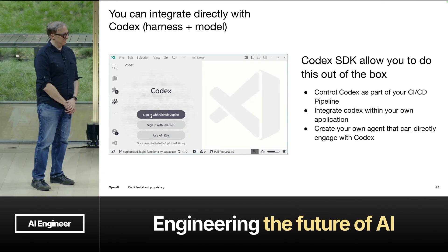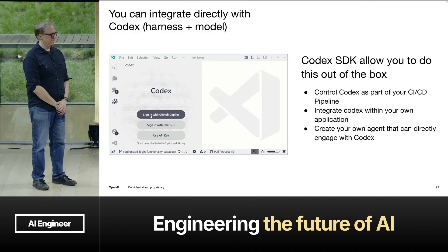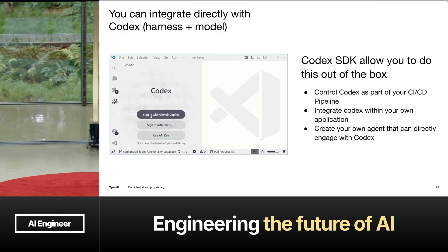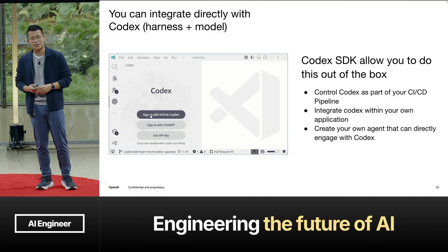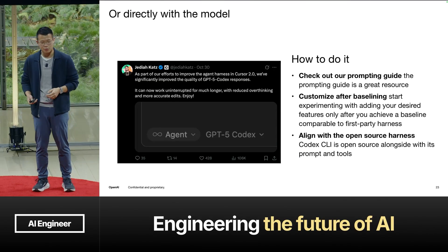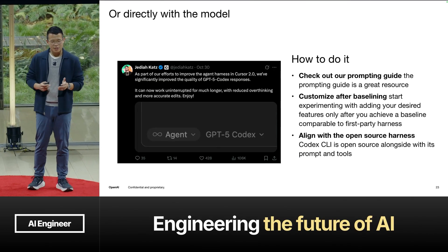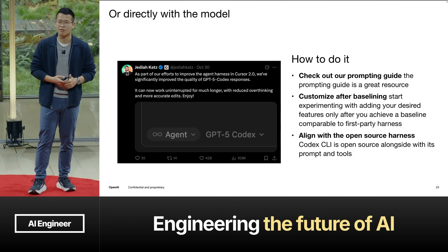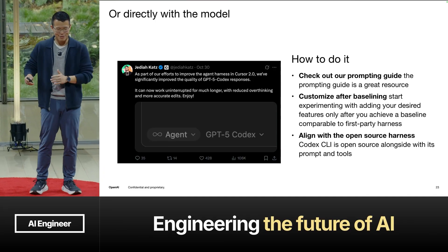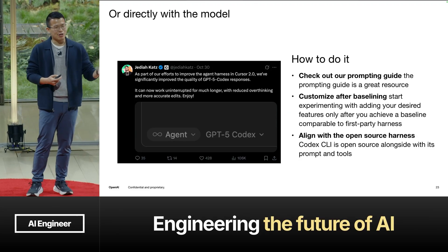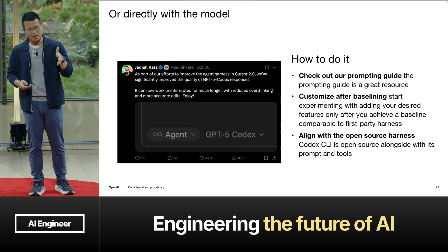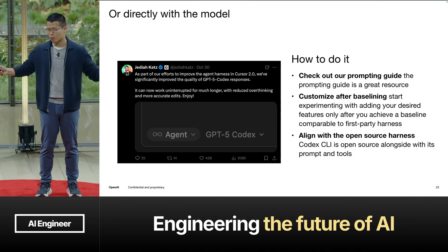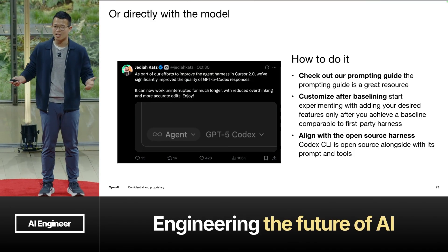Our top coding partners like GitHub have used this to great effect. We've created an SDK that they used to directly integrate with Codex, and you can also use the SDK to control Codex as part of your CI/CD pipeline or as an agent that directly interacts with your own agent. If you really want to customize the agent layer, you can do that too. As an example, we worked closely with the Cursor team to get the best performance out of the Codex model — not the agent; the model is different from the agent. They did so by aligning their tools to be in distribution with how the model is trained, and by aligning the harness with our open source implementation of Codex CLI. All of this is publicly available — you can fork the repo, use our source code, go nuts.